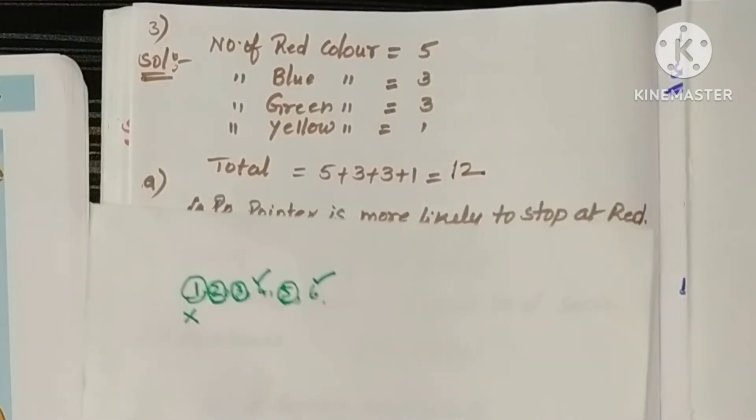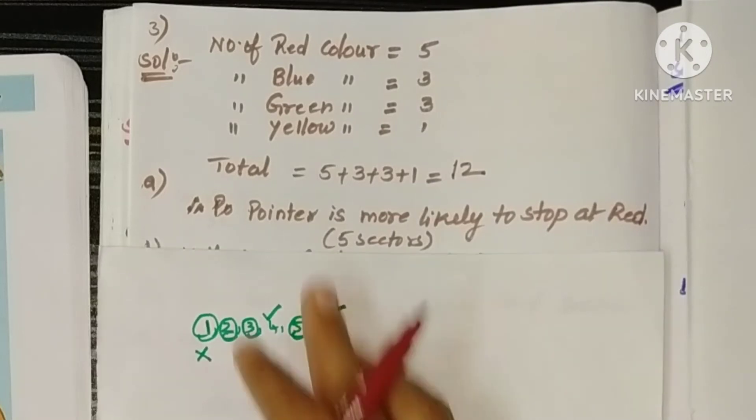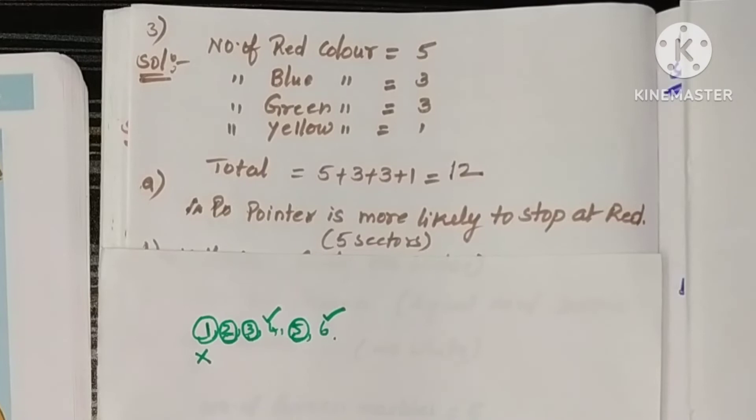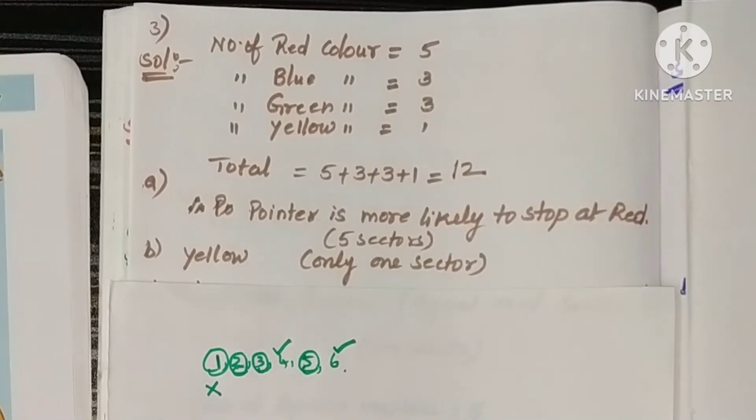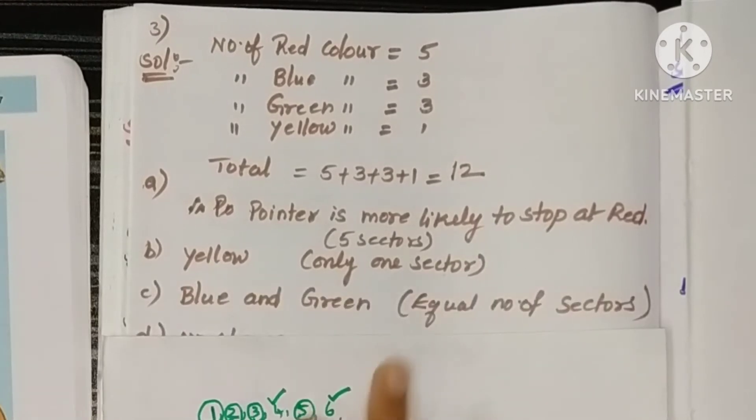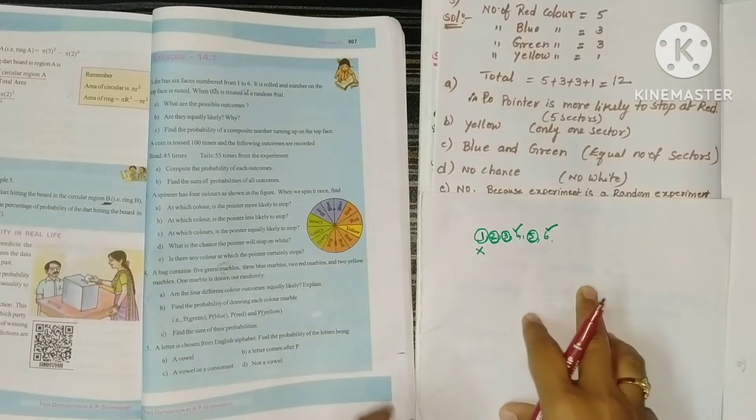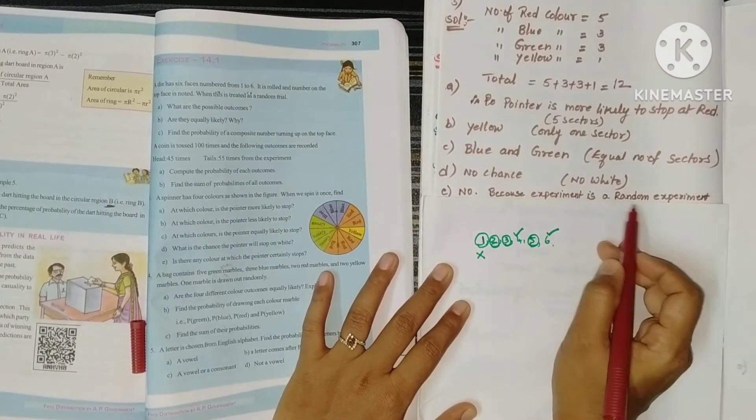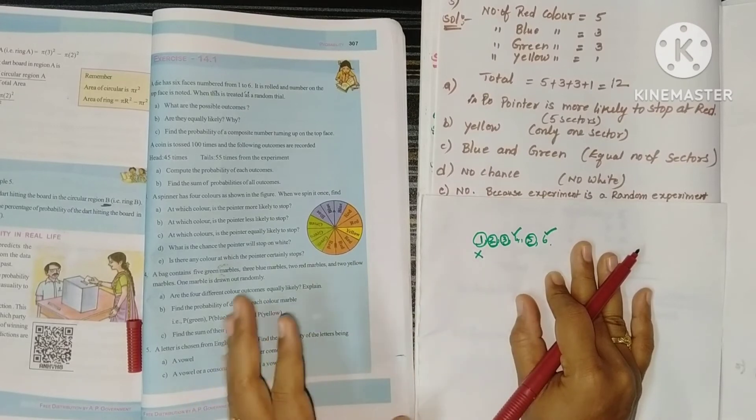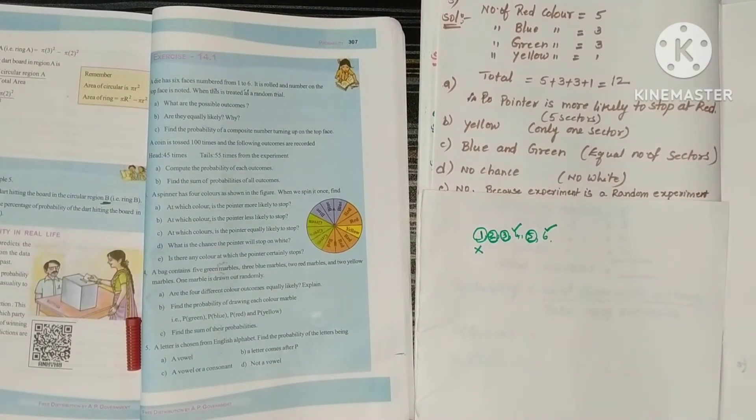See, for the first question, first write number of red color parts or sectors: 5. Number of blue 3, number of green colors 3, yellow colors 1. Total 5 plus 3 plus 3 plus 1, how much? It is 12. Now first question: at which color the pointer more likely to stop? Red. Pointer is more likely to stop at red. At which color is the pointer less likely to stop? At yellow, only one sector. At which color is the pointer equally likely to stop? Blue and green, because equal number of sectors. What is the chance the pointer will stop on white? No chance because there is no white. Is there any color at which the pointer certainly stops? No, because the experiment is a random experiment. Total outcomes are known, but we cannot predict the exact outcome. This is the solution of the third problem.